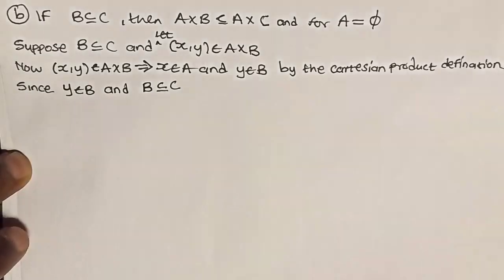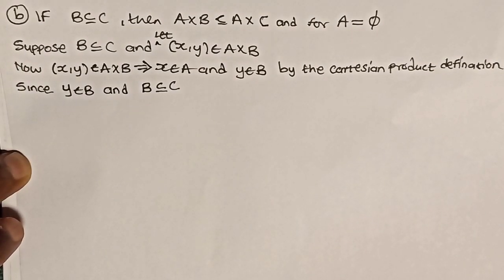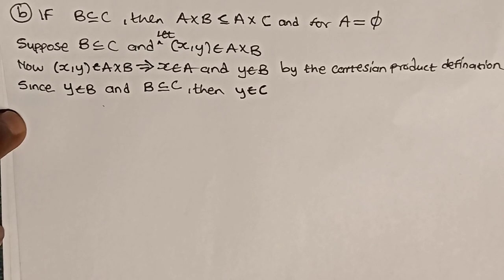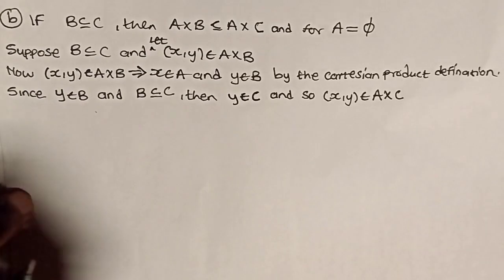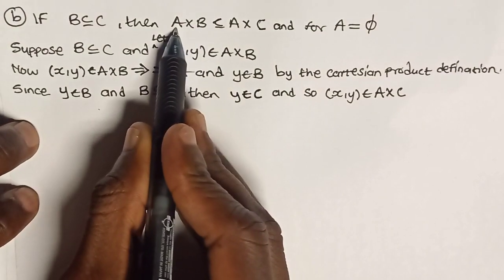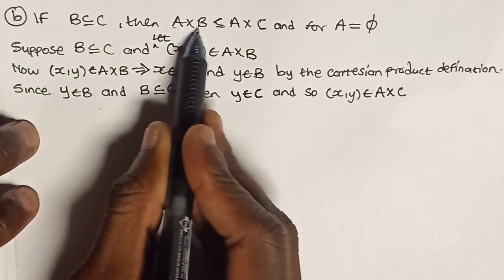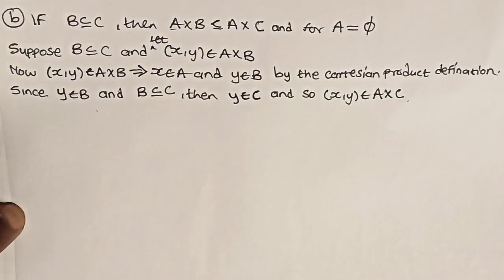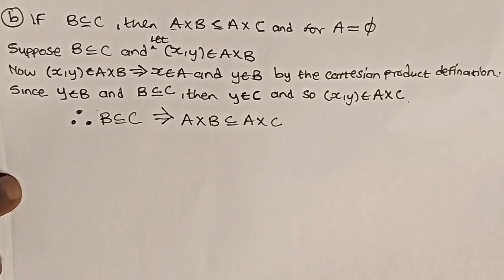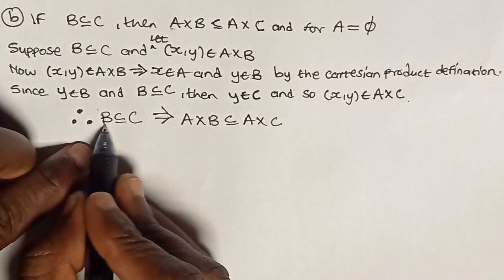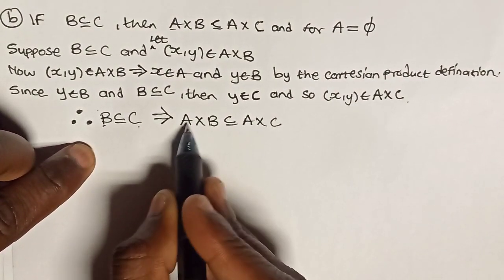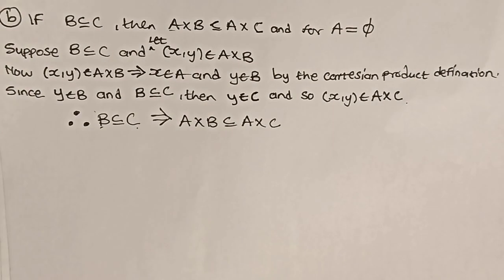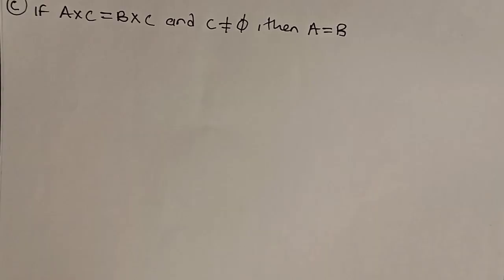Since Y is in B and B is a subset of C, then Y is also in C. And so the pair (X, Y) is in A cross C. That's it for the proof: we assumed (X, Y) is in A cross B, then we have shown that (X, Y) is in A cross C. Therefore we can conclude that B being a subset of C implies A cross B is a subset of A cross C.